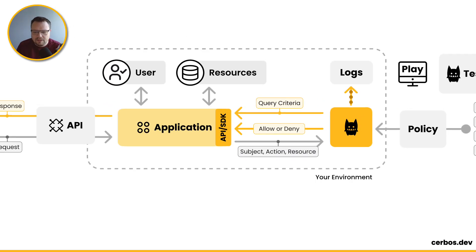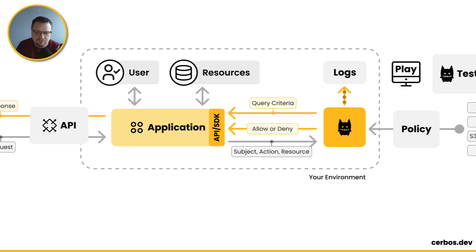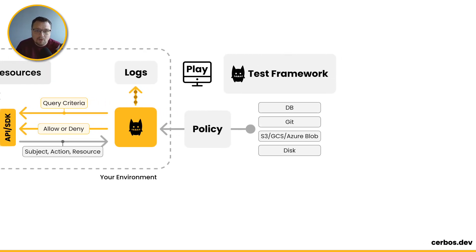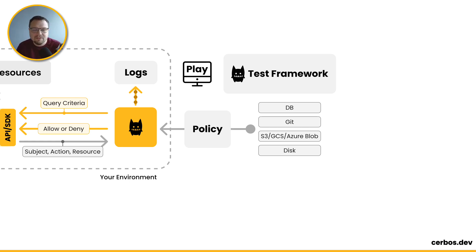That request comes over into the SERBOS instance, and then that SERBOS instance has loaded into it policy. SERBOS policies are YAML definition files that define the different kinds of resources inside of your system, the different actions that can be done on that resource, and under which condition. And this is where you can do your simple role-based checks — so to do the view action, you must have the role of user — or you can do much more fine-grained attribute-based checks, where, for example, the edit action should only be allowed if the user's role is manager and the owner ID of the resource is equal to the ID of the manager making the request.